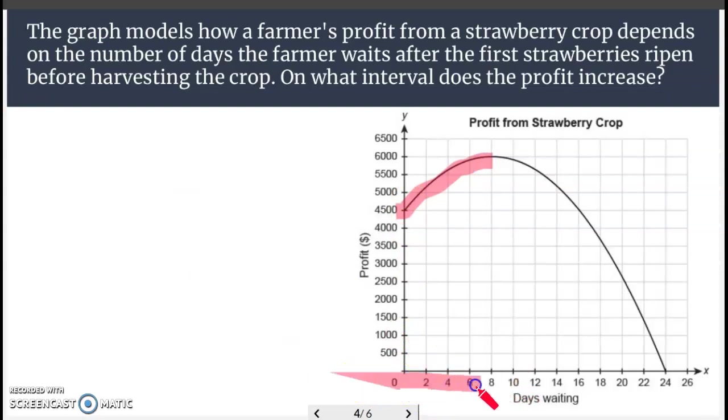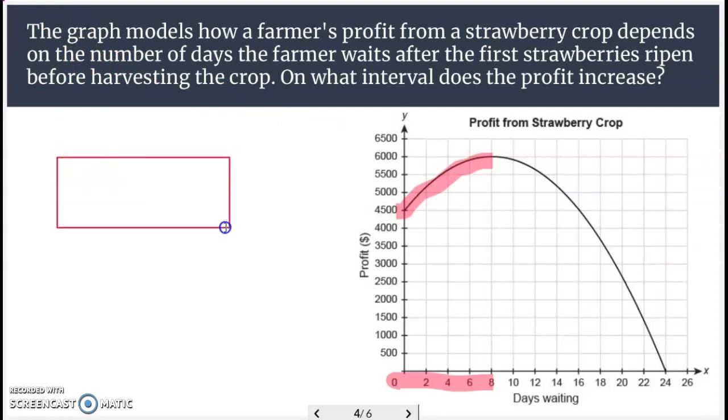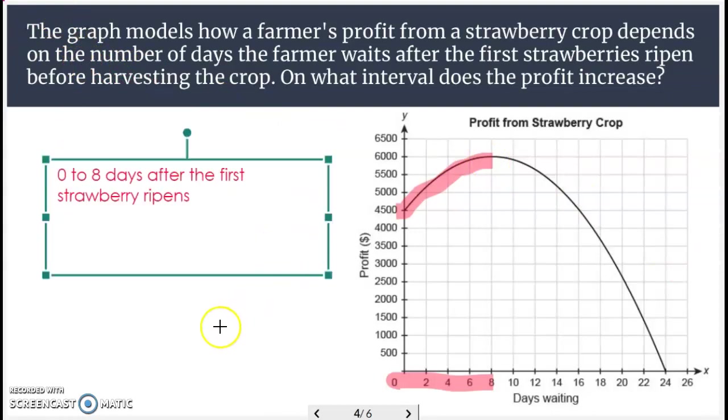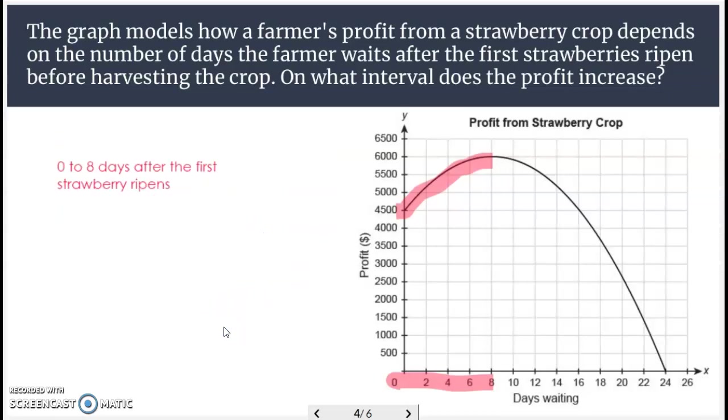And then after that, the strawberries start getting less ripe. And you know how fruit behaves. Nobody wants overly ripe fruit. You want to eat it as soon as it's picked as possible. And this graph kind of shows that. The profits start to go down the longer they wait to pick the strawberries. So 0 to 8 days after the first strawberry ripens.